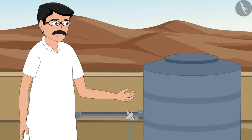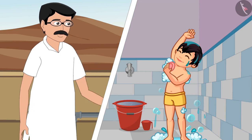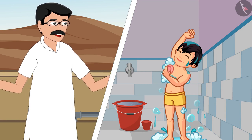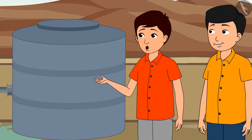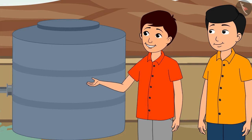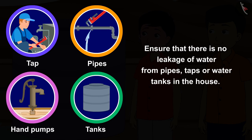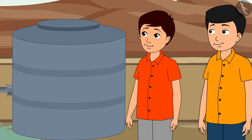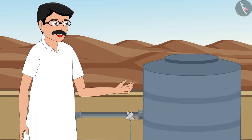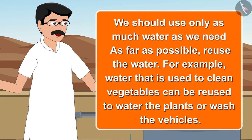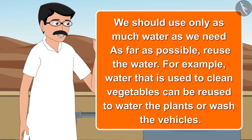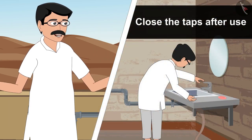Even while taking a bath, one must first fill water in the bucket and then bathe — one should not let the tap run while bathing. If there is leakage anywhere, one must ensure that pipes, hand pumps, and tanks are repaired. We have to check that there is no leakage in our house. We should use only as much water as we need, reuse water, and always close taps after use.